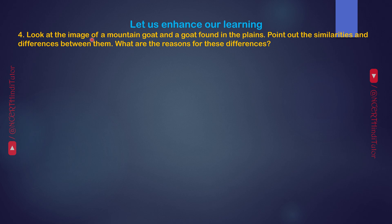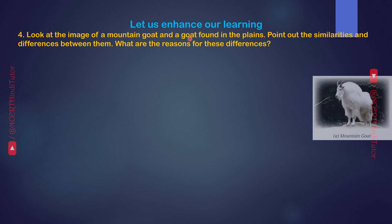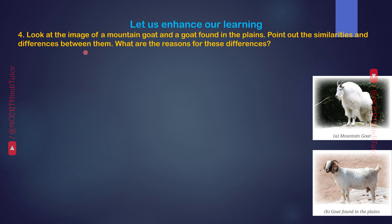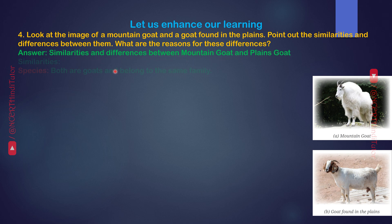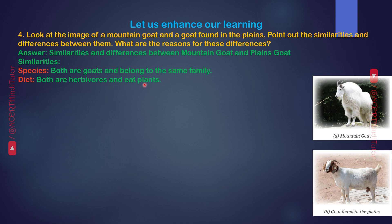Question 4. Look at the image of a mountain goat and a goat found in the plains. Find out the similarities and differences between them. What are the reasons for these differences? Answer. Similarities between mountain goat and plain goat: Species — both are goats and belong to the same family. Diet — both are herbivores and eat plants. Body structure — both have hooves and horns.